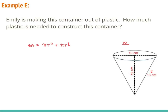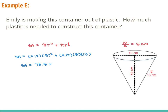And our radius is half the diameter. Since our diameter is 10, half of that is 5. So our radius is 5. Now we substitute into our formula: 3.14 times 5 squared plus 3.14 times 5 times 13. We have to square before we multiply, so 3.14 times 25 is equal to 78.5, plus 3.14 times 5 times 13 is equal to 204.1. Now we add and we'll get 282.6 centimeters squared.